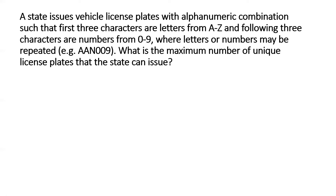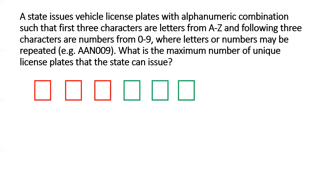To solve this problem we first start with six placeholders for the license plate. The placeholders for the letters are in red and those for the numbers are in green. In how many different ways can we fill up the first placeholder? That one can be filled by any one of the 26 letters from A to Z, so the first placeholder can be filled up in 26 different ways.